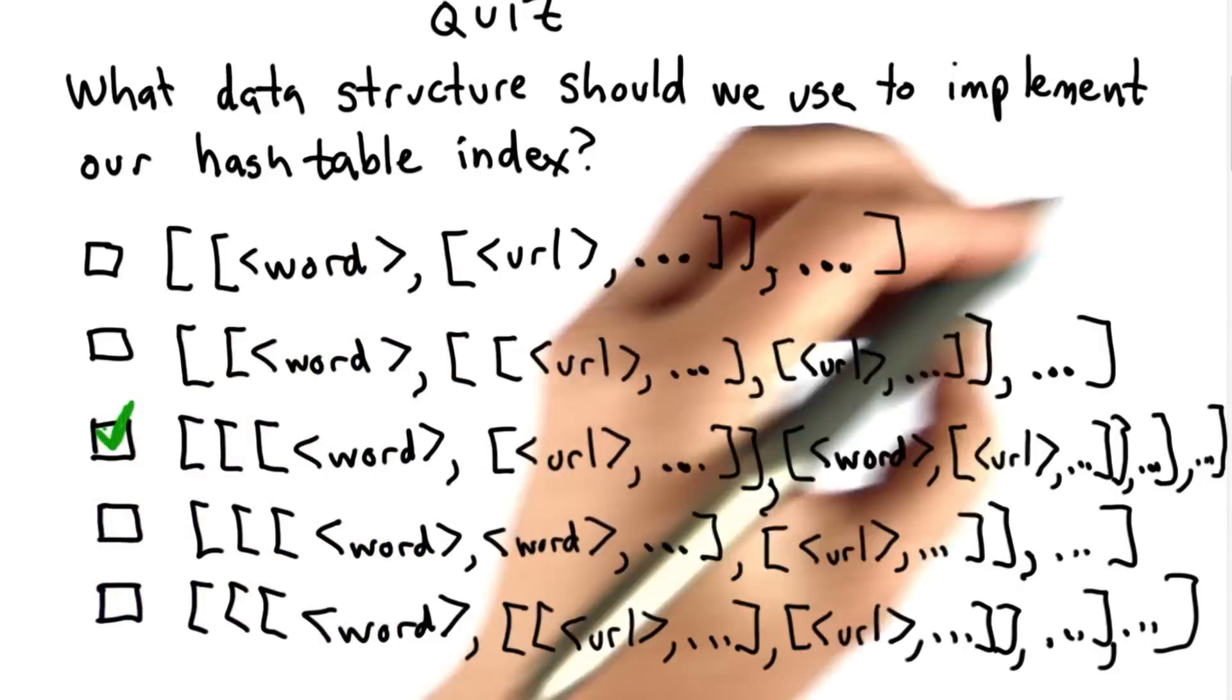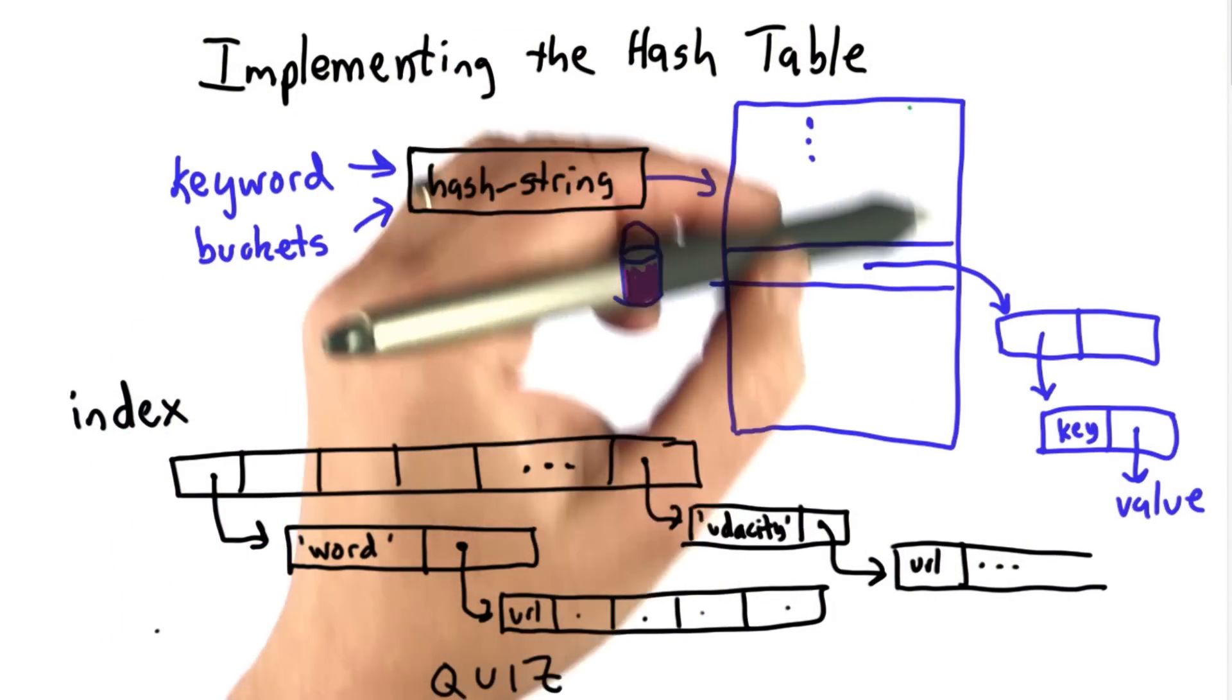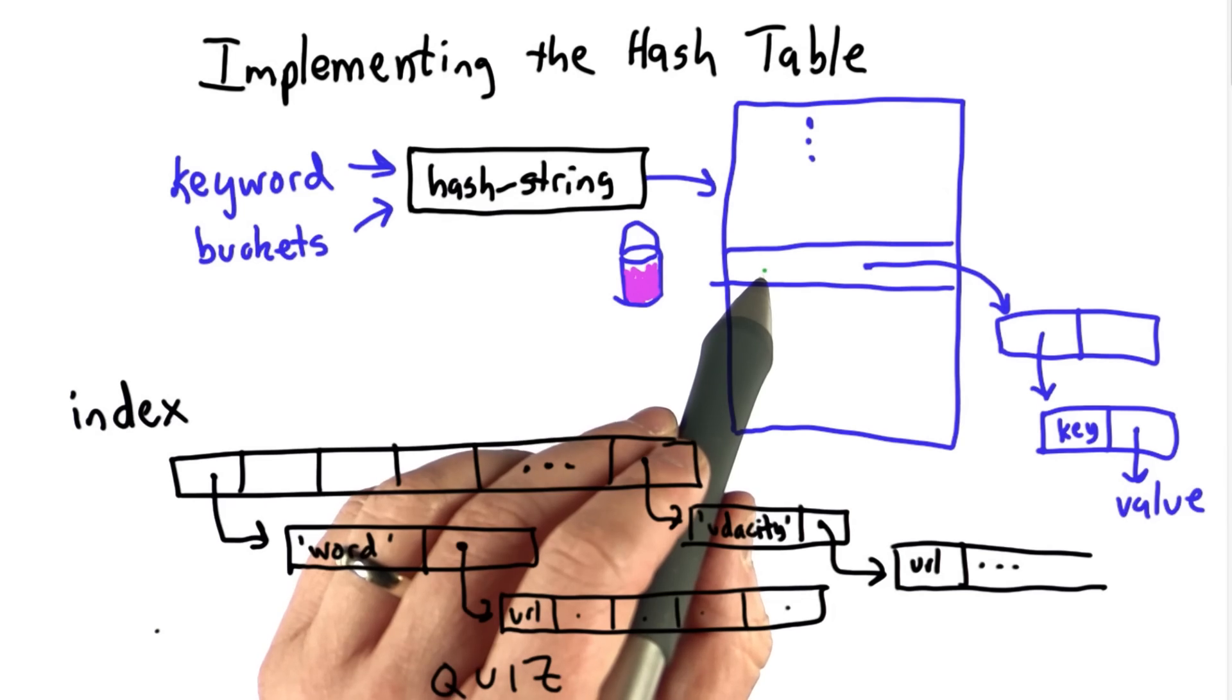And the main component we need is a way of representing a bucket. So here's our picture of our hash table. What we want is a list.